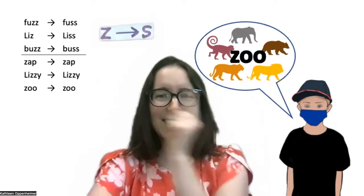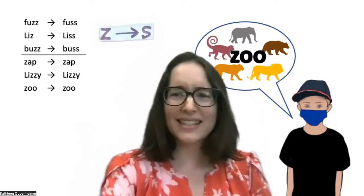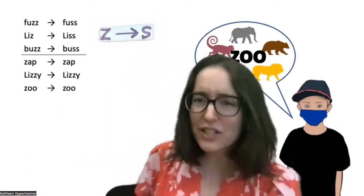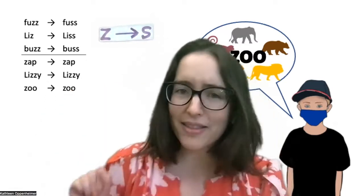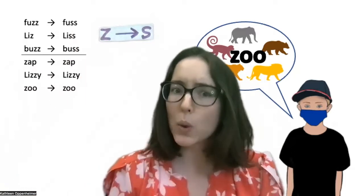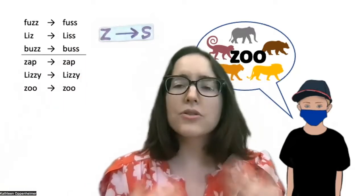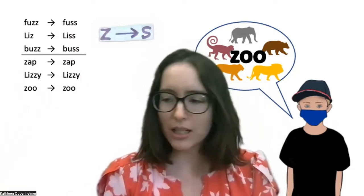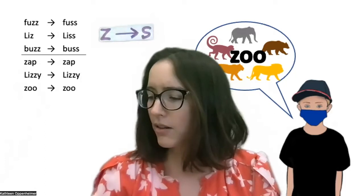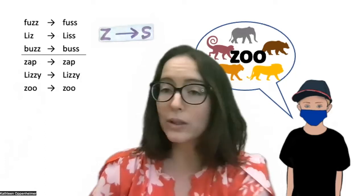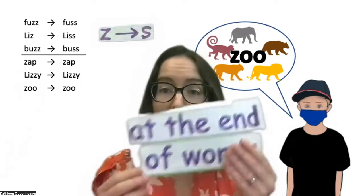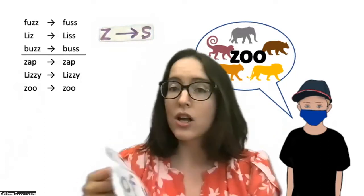That's right, so let's add that to our list. Now it looks like we need to revise our hypothesis because this Z turning into S is only part of the story. The students are usually pretty quick to figure out that it only happens at the ends of words.